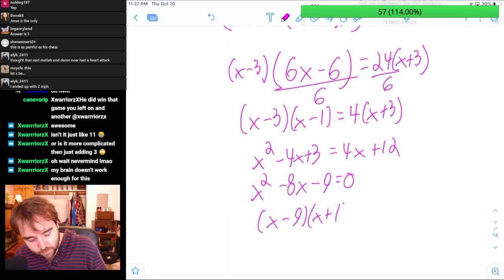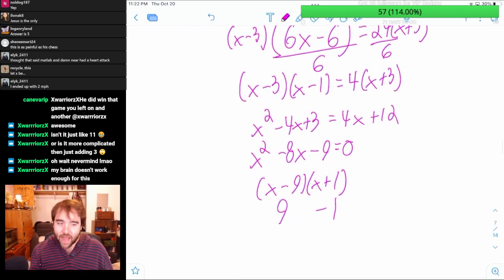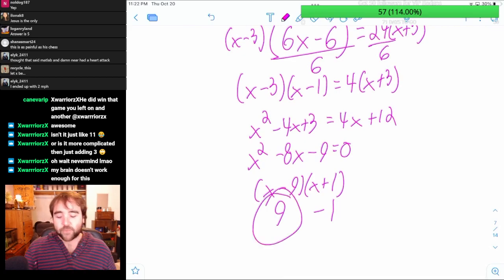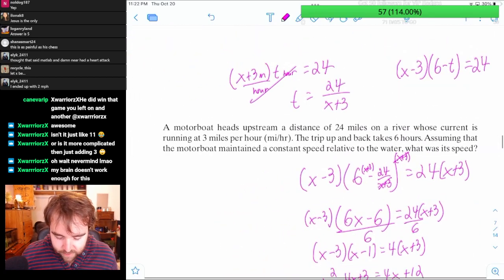X minus 9, X plus 1. So we get negative 1 and 9, and we can't have a negative speed. So our speed has to be 9.